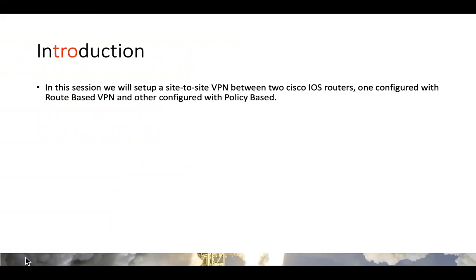There was a huge demand raised over LinkedIn and YouTube to test if we can configure two routers where one router is configured as policy-based and another is configured as route-based, and check if both routers can form a site-to-site IPsec VPN connectivity or not. So to answer that question, I tried to set up a lab and tested that functionality.